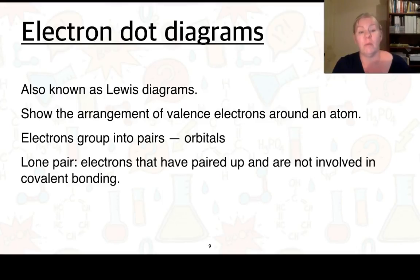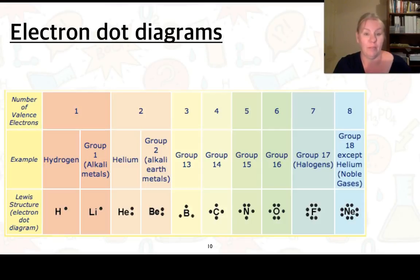Electron dot diagrams are what we use to show the arrangement of valence electrons around an atom. They're also known as Lewis diagrams, so depending on which textbook you use, they may use either of those names. Electrons group into pairs, or as we call orbitals. A lone pair is electrons that have already paired up and they're not allowed to be involved in covalent bonding.